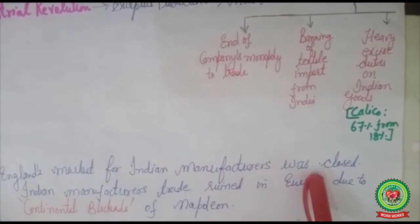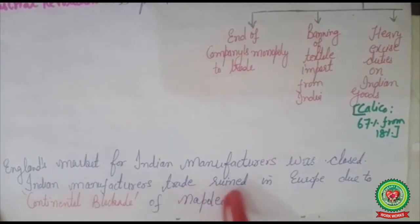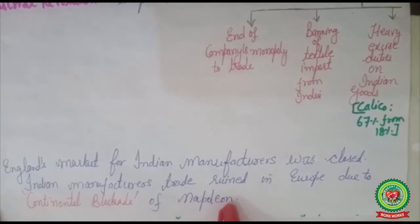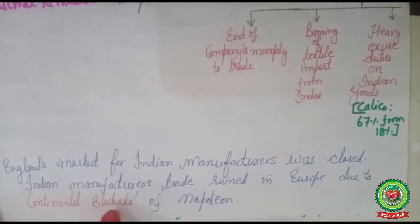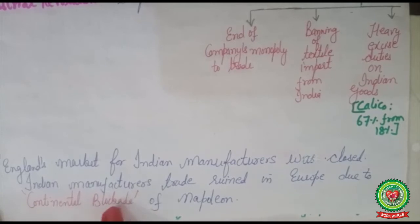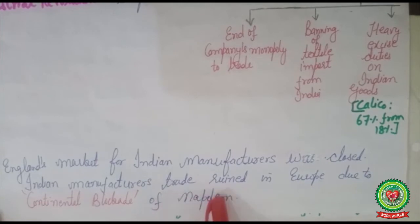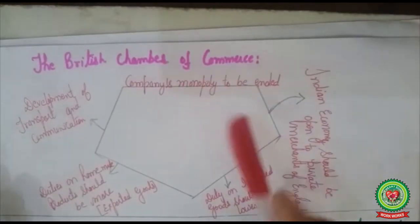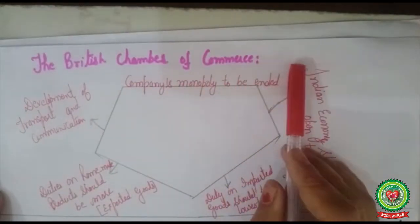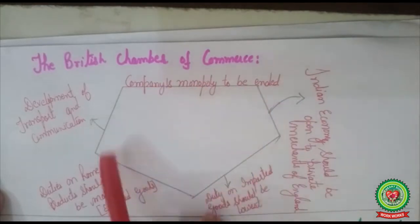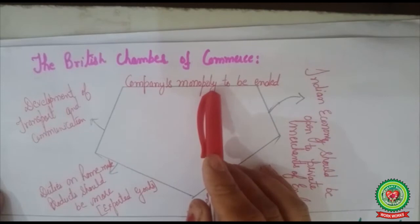Indian manufacturers' trade was ruined in Europe due to the continental blockade of Napoleon. Napoleon, a French statesman, had established a continental blockade, meaning trade of other European countries with England was banned. As India was a colony of England, trade between India and other European countries with England was also banned.